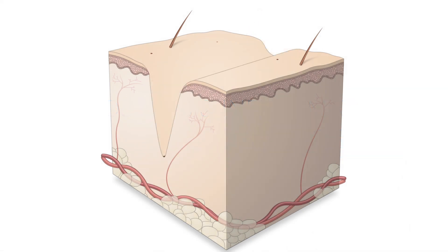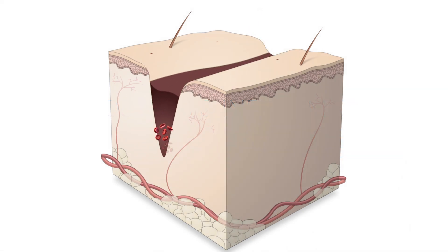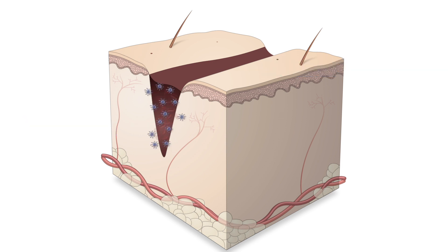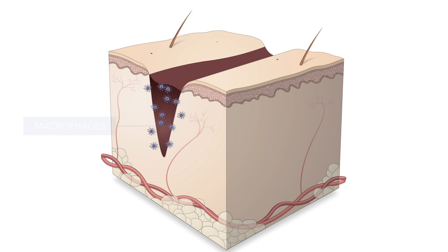Within the first few minutes after the injury, platelets aggregate at the injury site to form a fibrin-fibronectin plug, which reduces active bleeding. During the inflammation phase, bacteria and cell debris are phagocytosed and removed from the wound by polymorphonuclear neutrophils and macrophages.